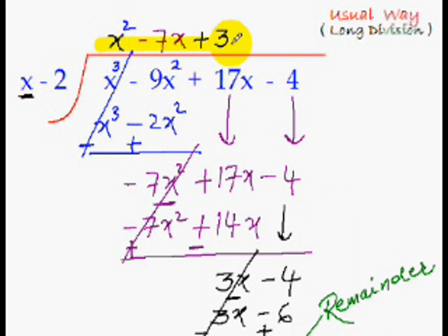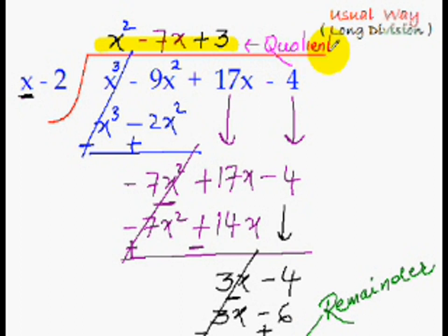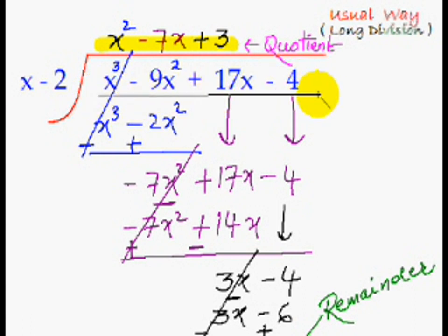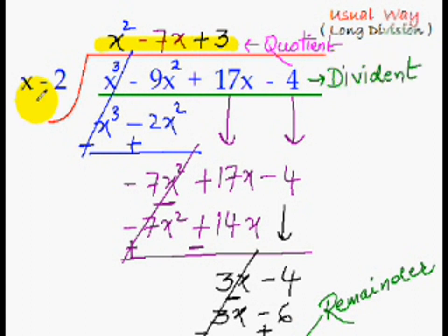Whatever is at the top is called the quotient. The polynomial that was being divided is known as the dividend, and the polynomial that was dividing is known as the divisor.